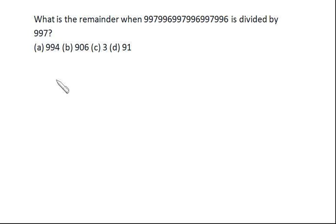Now friends, this is one more problem from the no paper and pen series. What is the remainder when 997996997996997996 is divided by 997? The first clue I'm getting from here is just look at the number. You will be getting the combinations 997 996, 997 996, 997 and 996, right?